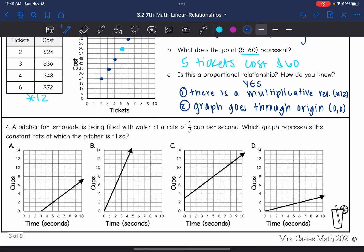Last one. Number four says a pitcher for lemonade is being filled with water at a rate of one third cup per second, which graph represents the constant rate at which the pitcher is filled.